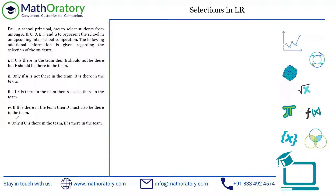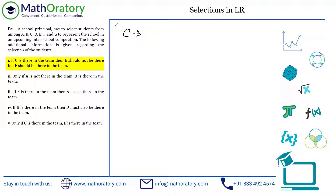Understanding each and every condition is important. If you have any problem with any of the statements, do mention in the comments. First statement: if C is there in the team, then E should not be there, but F should be there. So if C is present, then E cannot be present. This automatically also means that if E is there, then C is not there. So instead of writing all of this, I'm going to indicate this simply as C slash E — meaning only one of C or E may be selected.